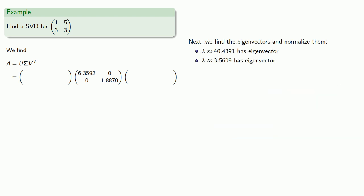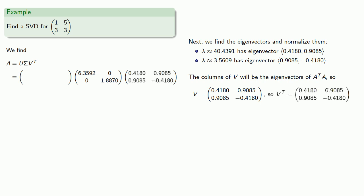Now that we know the eigenvalues, we can find the eigenvectors and normalize them. And remember, the columns of V will be the eigenvectors of A transpose A. And so we have V equals this matrix, and V transpose is the transpose.